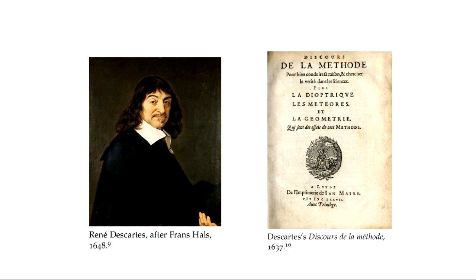That notation was invented by René Descartes in 1637. He published a book, the "Discours de la méthode," and in an appendix called "La Géométrie" he defines his exponent notation. He does more — he actually lays a foundation for what later was called the Cartesian coordinate system. So this is a very profound book.